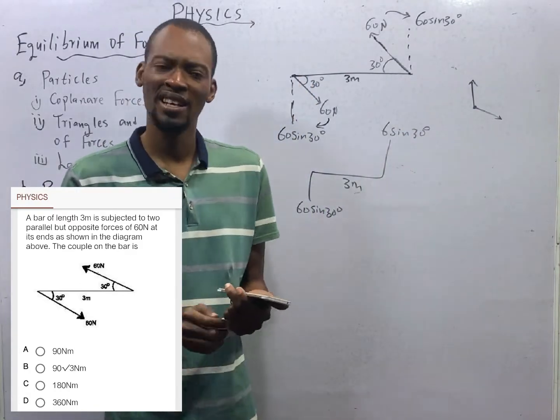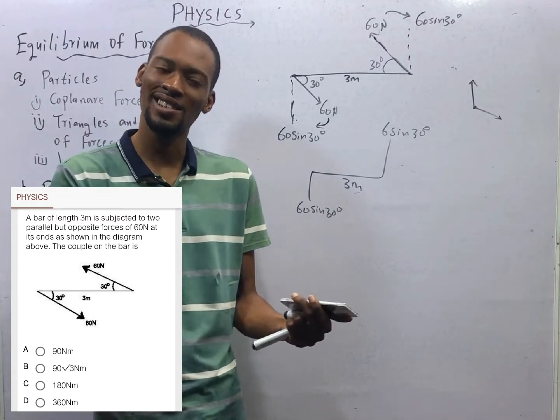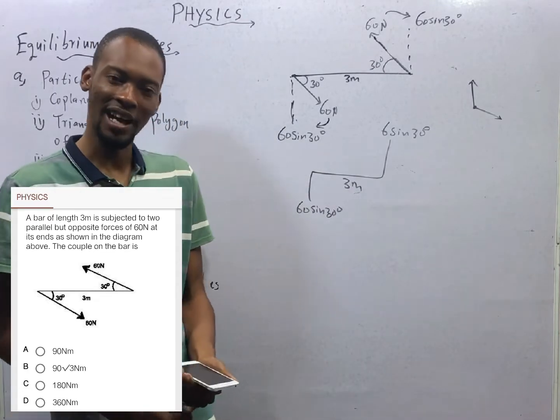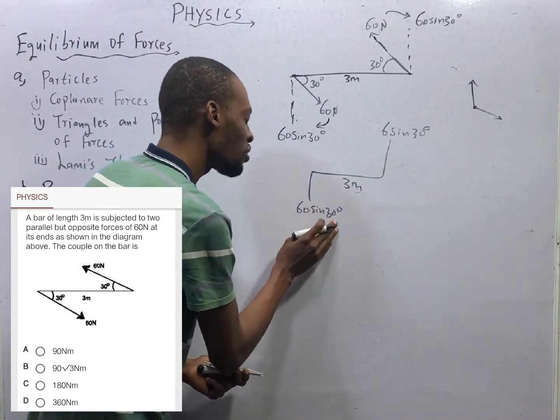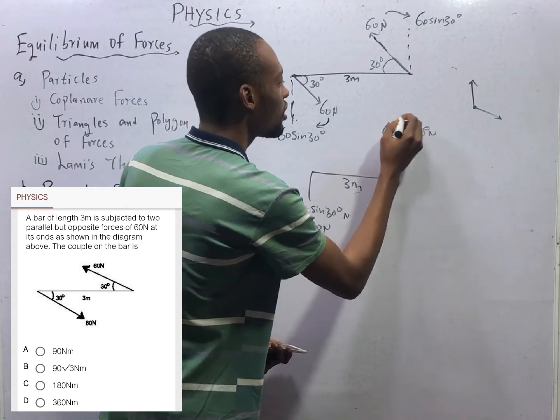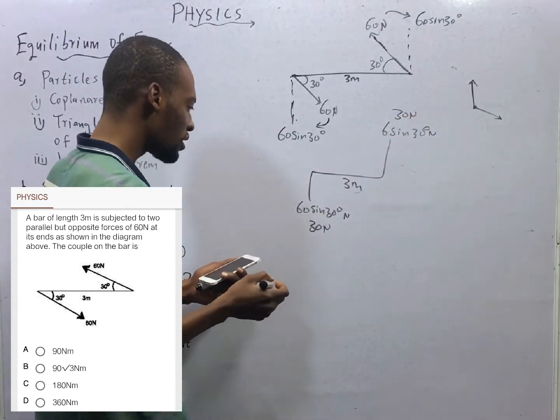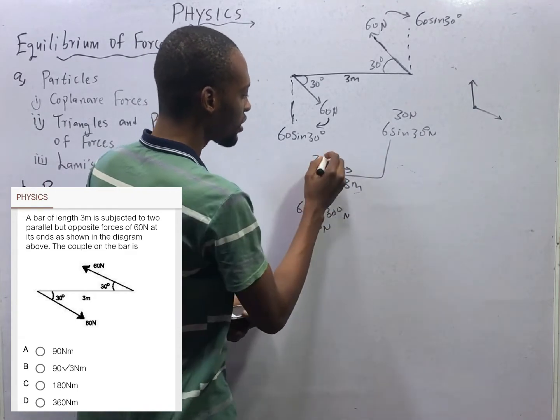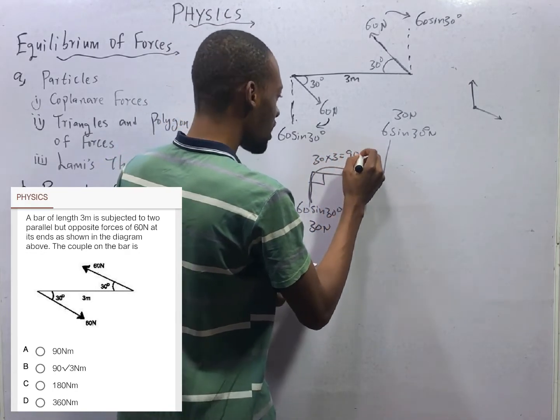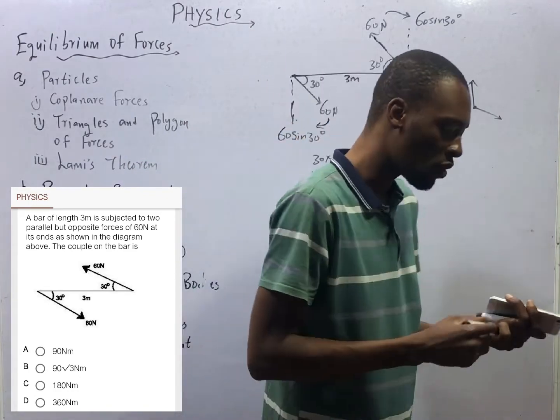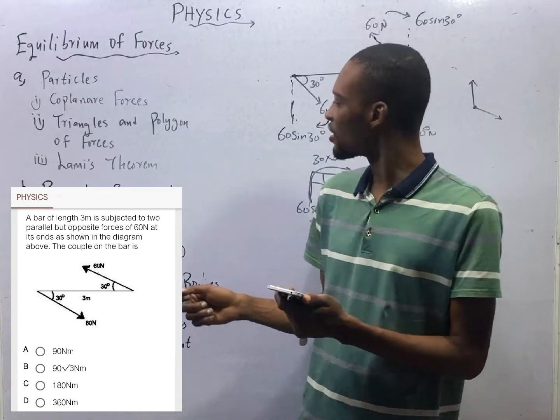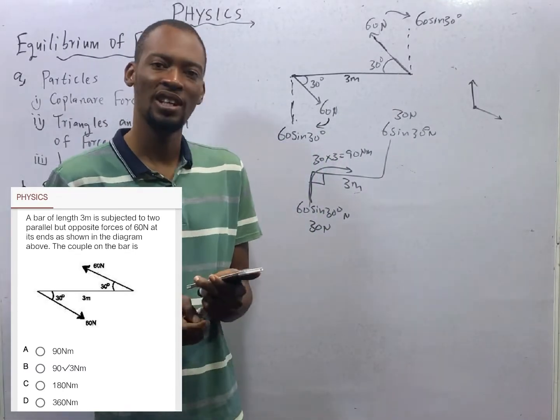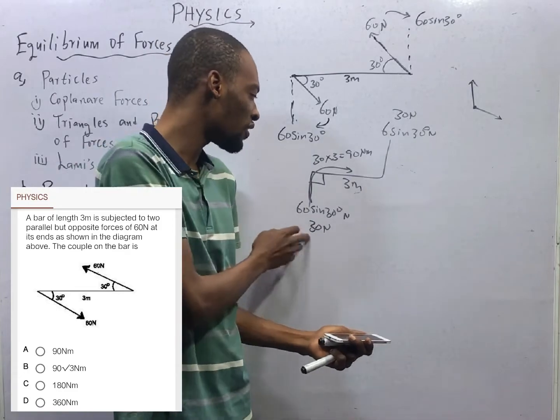Cos 60 degrees and sine 30 degrees are the same. Cos 60 degrees is 1 over 2. 60 times 1 over 2, this is 30 newton. Therefore, the couple will simply be 30 times 3 because they are perpendicular right now. 30 times 3 equals 90. So 90 newton meters is the couple of the bar. You don't need to do this and do this and add both of them. Because they are equal, opposite, acting in the opposite direction, their line of action do not intersect. You take one of them and multiply by the distance.